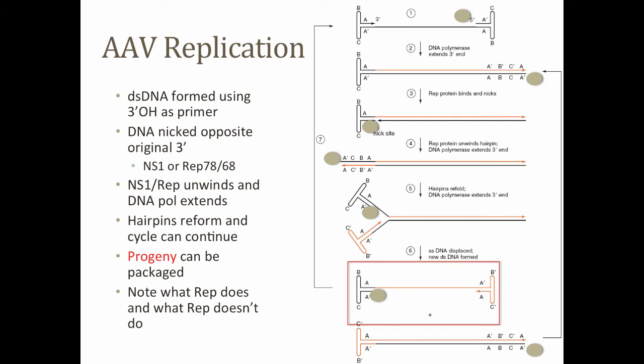In the case of adeno-associated viruses, extension occurs from this free three-prime OH — that's a DNA primer priming DNA replication. Down at the five-prime end, you have the NS1 or rep protein associated with the five-prime end of the genome. You get extension, you get breakdown of the hairpin at the five-prime end. Then the rep protein that was associated with the original five-prime end dissociates and rebinds just opposite the original three-prime end on the opposite strand, and it introduces a nick — a single-stranded DNA break.